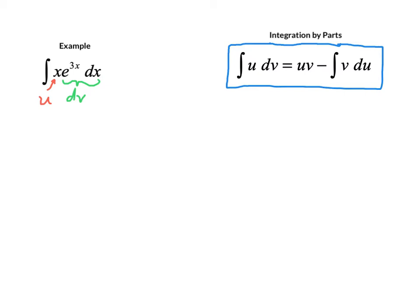So once we do that, we set up for our attempt at integration by parts, because nothing is guaranteed here when we're integrating. So we write this out. Okay, u is equal to x, and dv is e to the 3x dx. The differential will always be with dv, because we need that in order to go ahead and integrate.